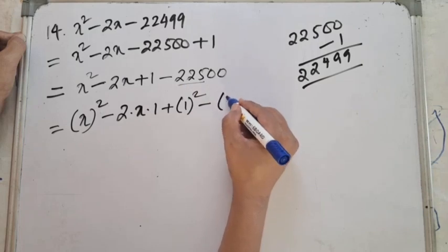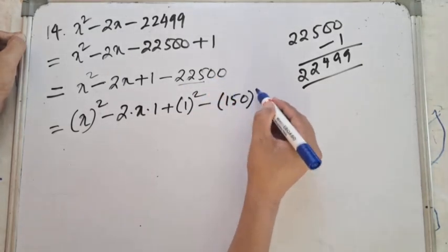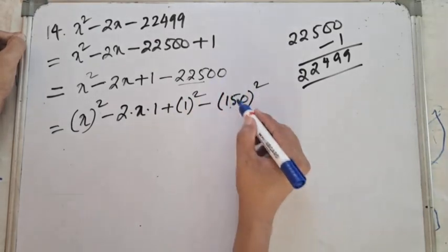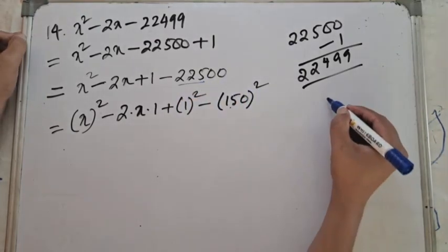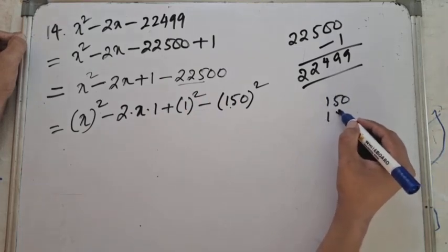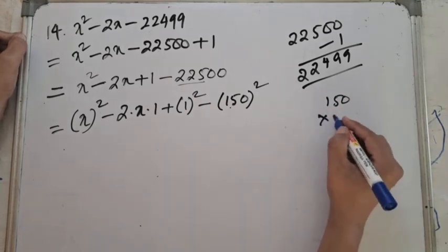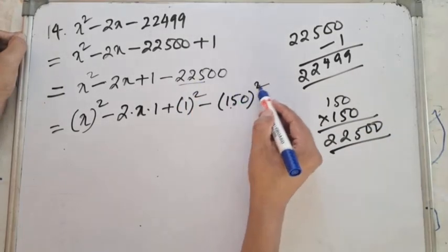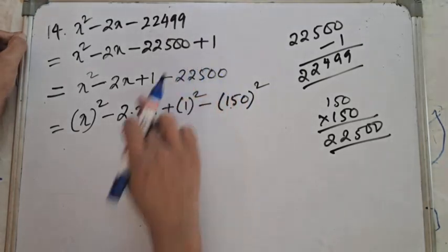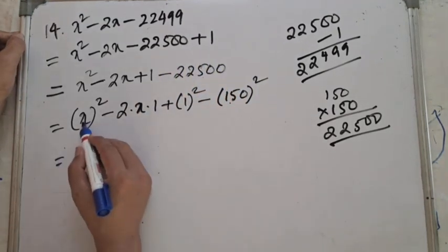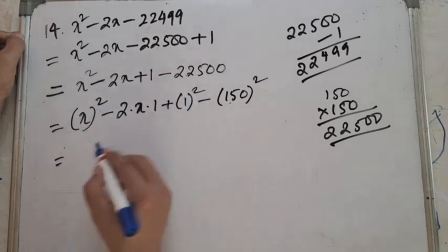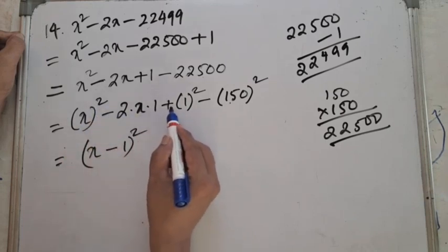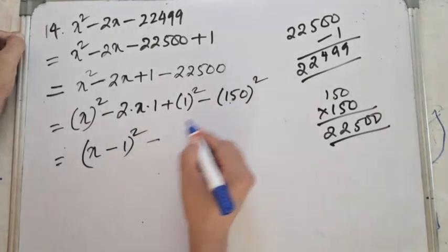Now 22,500 = 150², because 15² = 225 and 150² = 22,500. So the expression becomes (x - 1)² - 150², using the identity a² - b² = (a+b)(a-b), where a = x-1 and b = 150.